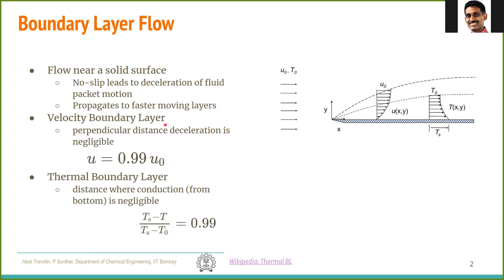We define the velocity boundary layer as the perpendicular distance from the surface at which the velocity reaches the free stream velocity. Beyond this, the velocity equals the free stream velocity, and the distance between the wall and this point is the boundary layer thickness. For most engineering applications, the boundary layer thickness is taken to be where velocity reaches 99% of the free stream velocity.